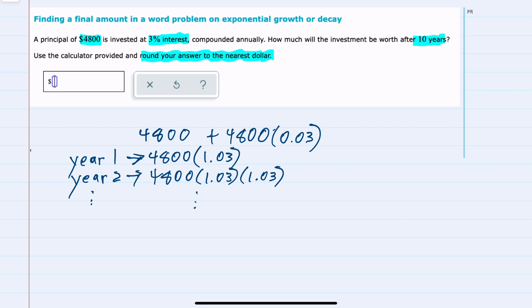Continuing this pattern, we could calculate the value at any year by taking that original amount, $4,800 here, and multiplying by 1.03 raised to a power that is the number of years that interest is being added.